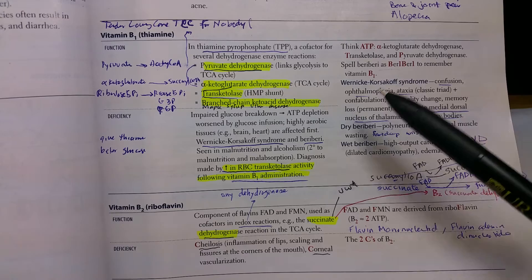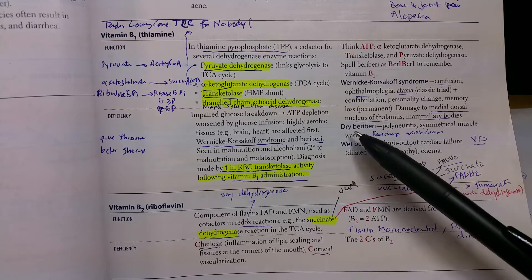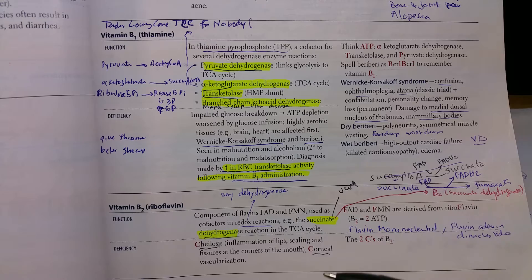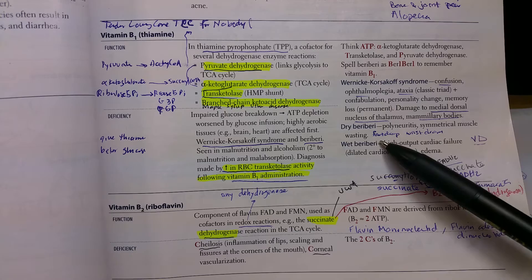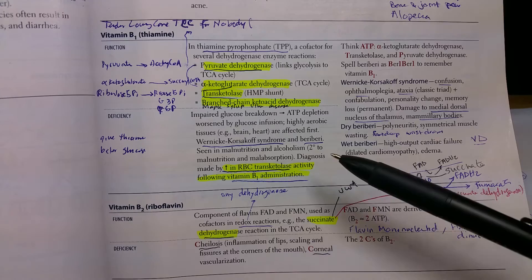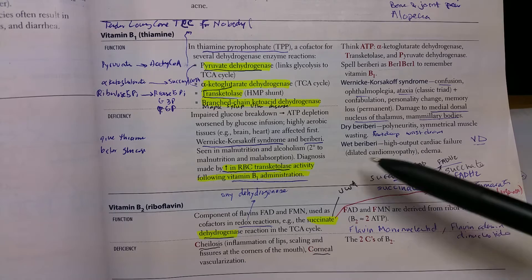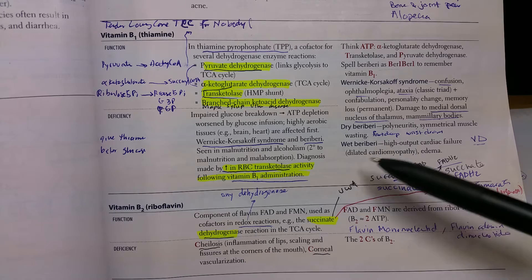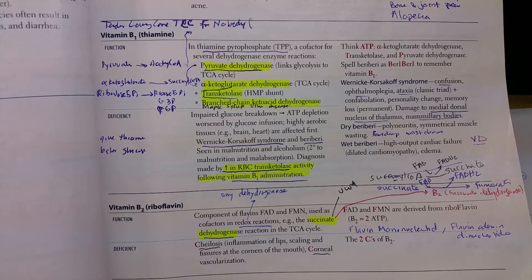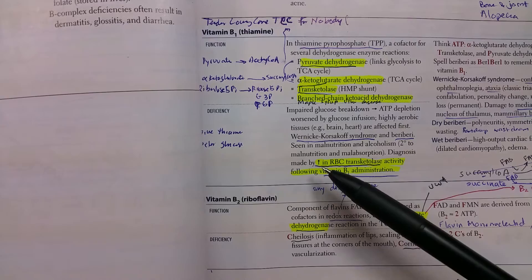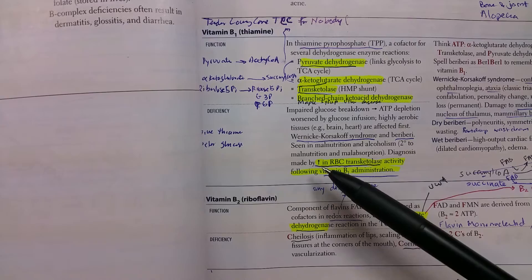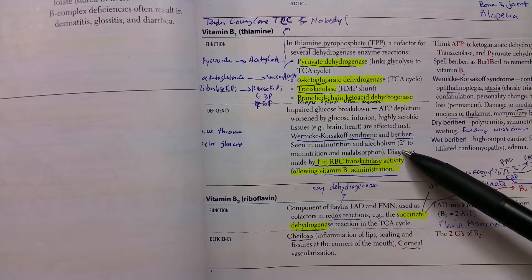Beriberi has two components: dry beriberi, which affects the nerves, affecting the myelin sheath causing foot drop, wrist drop, or neuritis. And wet beriberi affects the heart, causing vasodilation and then high output heart failure or cardiomyopathy. In transketolase, they sometimes use this enzyme to detect the deficiency. When we give thiamine, there is increased enzyme activity, which they can measure as RBC transketolase.